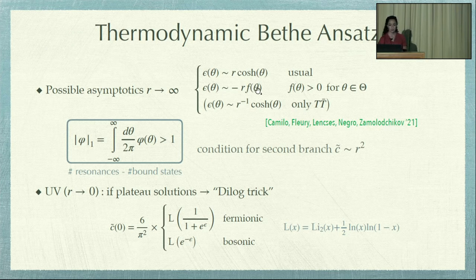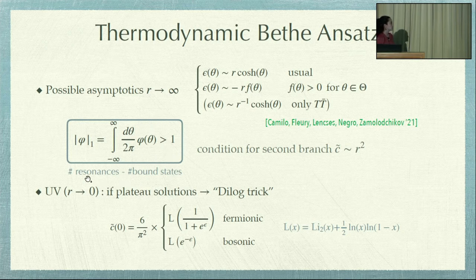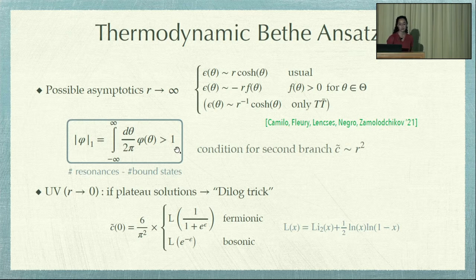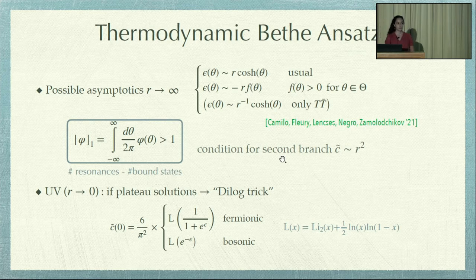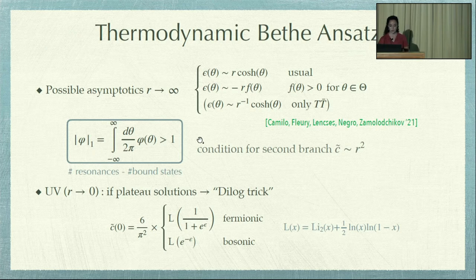In order to have the second branch, a necessary condition is that the kernel satisfies an inequality: the L1 norm of the kernel should be bigger than one. What this integral does is basically count the number of resonances minus bound states in the theory. This is an important condition because it tells you that if you have more resonances than bound states in your theory, then the second branch of solutions is allowed. This is for the IR, and it doesn't tell us if you could have some bifurcations at some finite R, but it's already a good thing to have this condition explicitly.